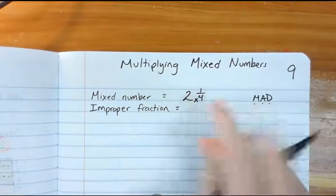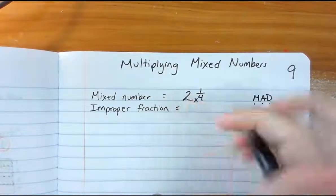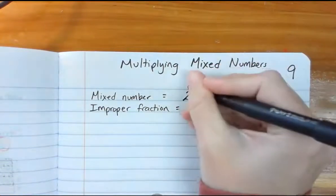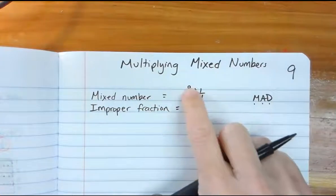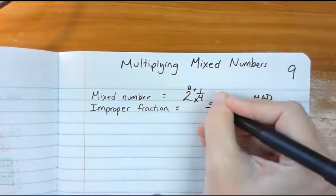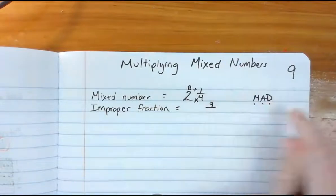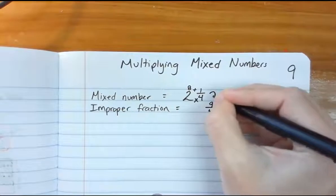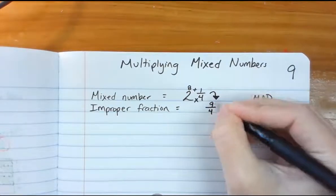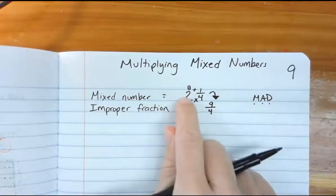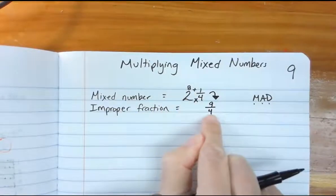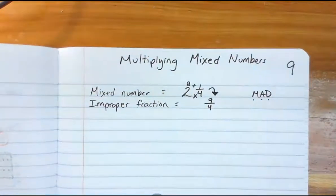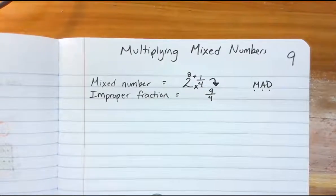To change a mixed number into an improper fraction, first multiply the denominator by the whole number: four times two gives me eight. Then add across the top — eight plus one is nine, that's my new numerator. D stands for denominator, so the denominator stays the same. So two and one-fourth equals nine-fourths. We're going to need this skill today while we multiply mixed numbers.